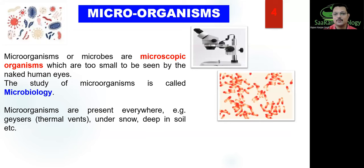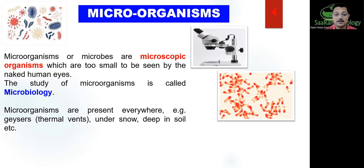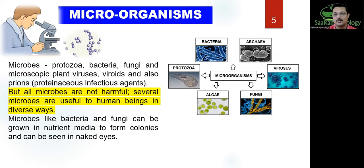Let's begin our understanding. When we talk about microorganisms, we are talking about the invisible world not seen through naked eyes — we need special devices to look at them. The study of microorganisms is called microbiology. You may have heard of Louis Pasteur, the great microbiologist. These microorganisms are omnipresent — right from desert to the tundra, in sulfur springs, under snow, deep in soil, everywhere. They are cosmopolitan. When we talk about microorganisms, their classes include bacteria, protozoa, virus, fungi, and algae.